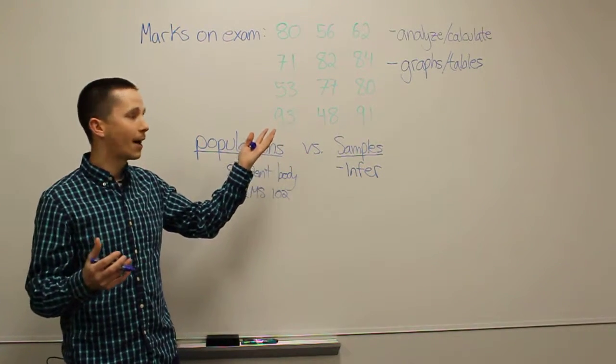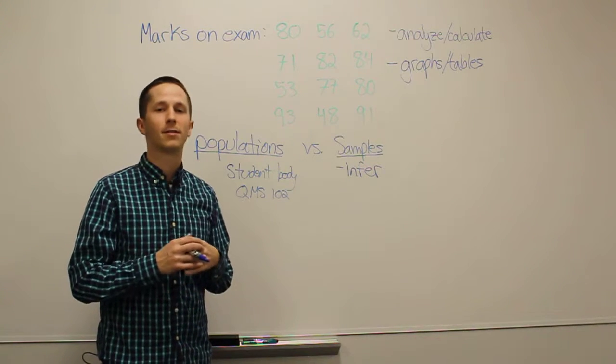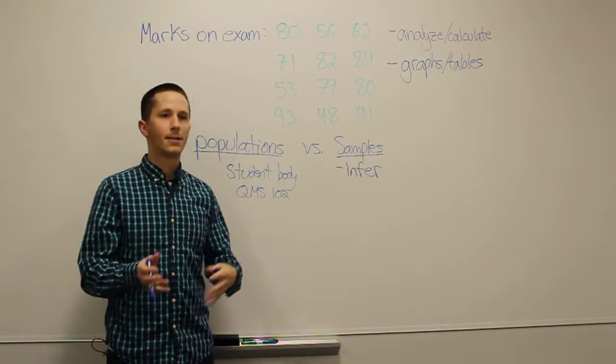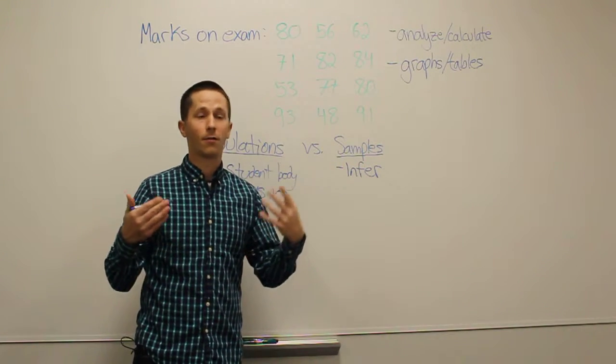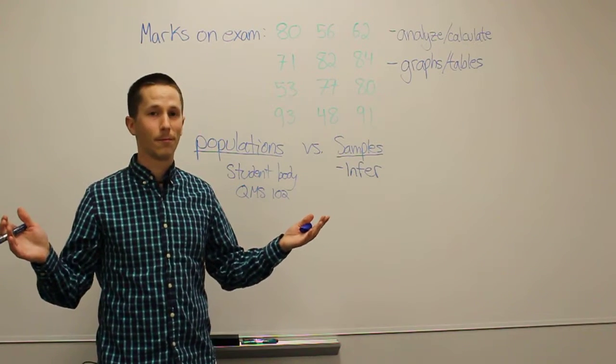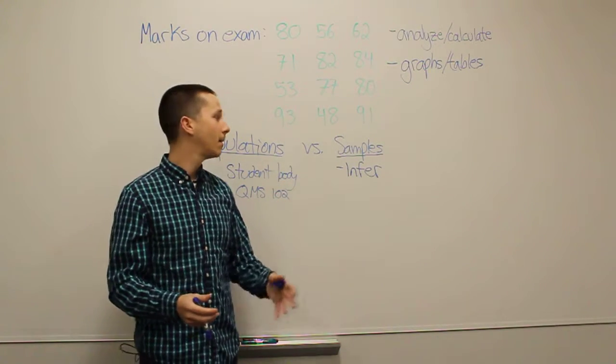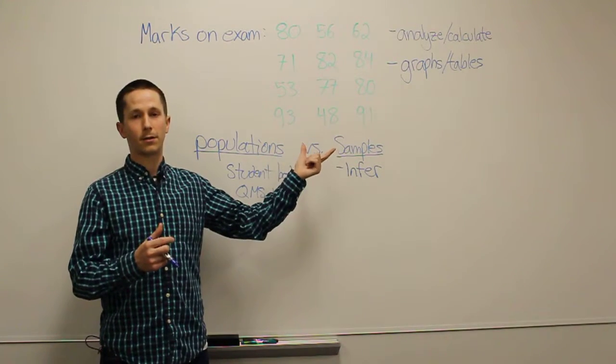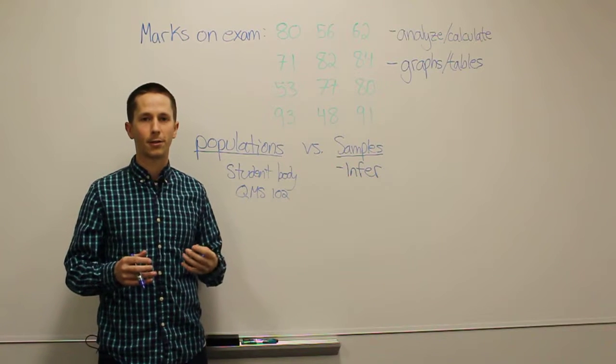And I've used academics as one example but this happens everywhere in the news. Anytime you read a statistic in the paper, 70% of people believe this, or anytime there's election results or something like that, they're not surveying all 30 million people in Canada. They're taking a small group and then inferring from that group information about the overall population.